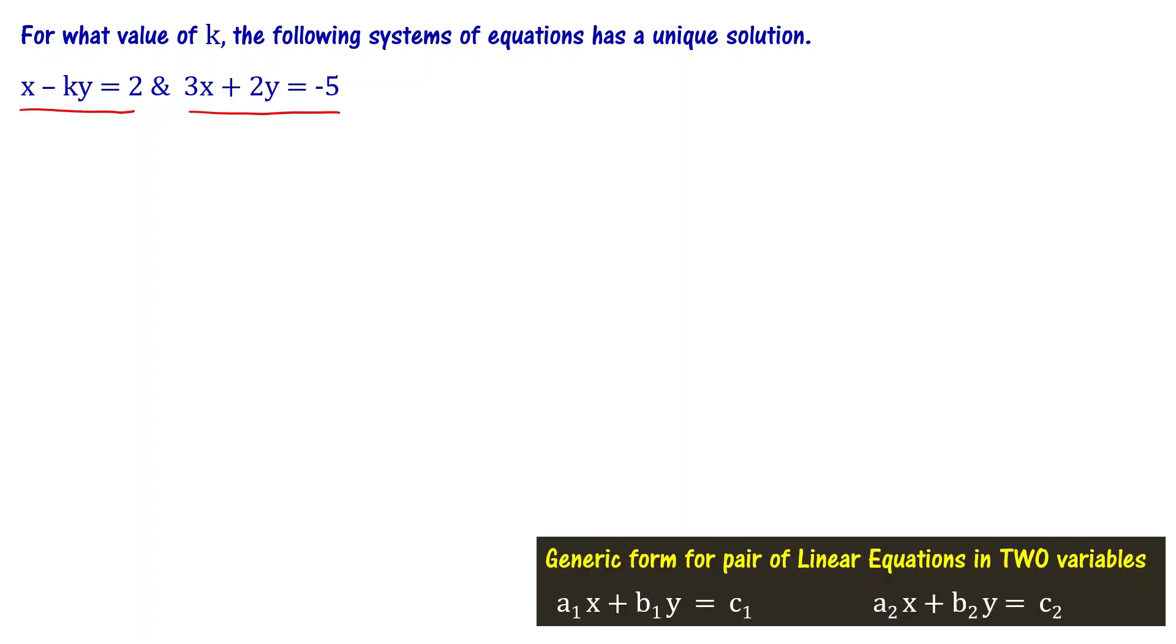We know that the generic form for a pair of linear equations in two variables is a1x plus b1y equal to c1 and a2x plus b2y equal to c2.